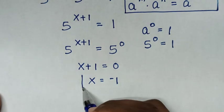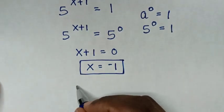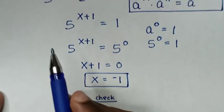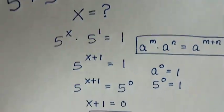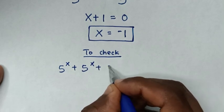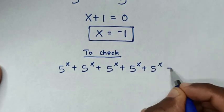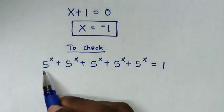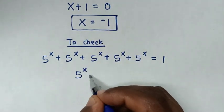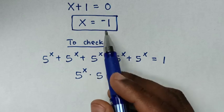Therefore, the correct answer for the value of x is negative 1. Now, to check if the value of x is correct, we go back to the original problem: 5 power of x plus 5 power of x plus 5 power of x plus 5 power of x plus 5 power of x is equal to 1. This simplifies to 5 power of x times 5 is equal to 1. We substitute the value of x, which is negative 1.